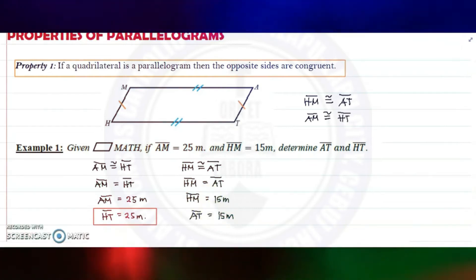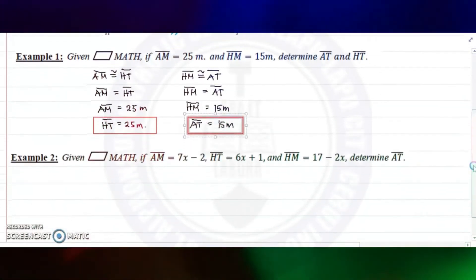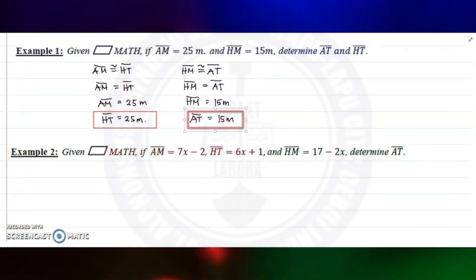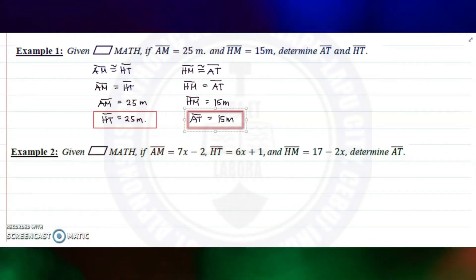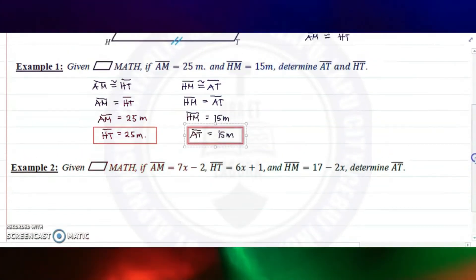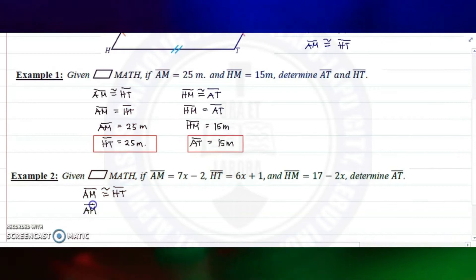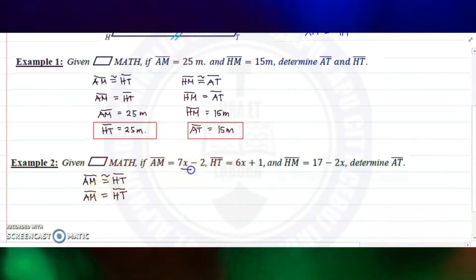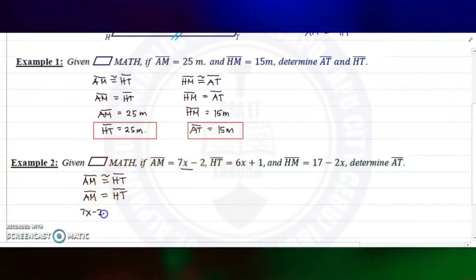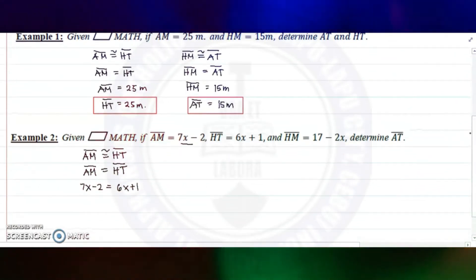Example number two: given parallelogram MATH, if AM is 7x minus 2, HT is 6x plus 1, and HM is 17 minus 2x, determine AT. Since AM is congruent to HT, they are equal. Substituting: 7x minus 2 equals 6x plus 1.